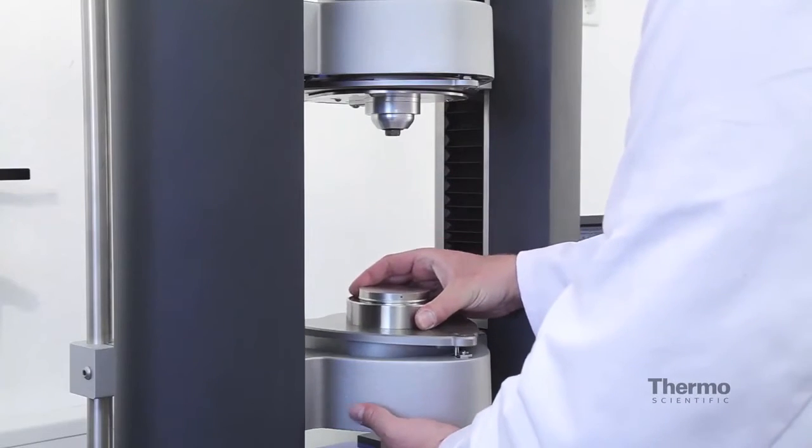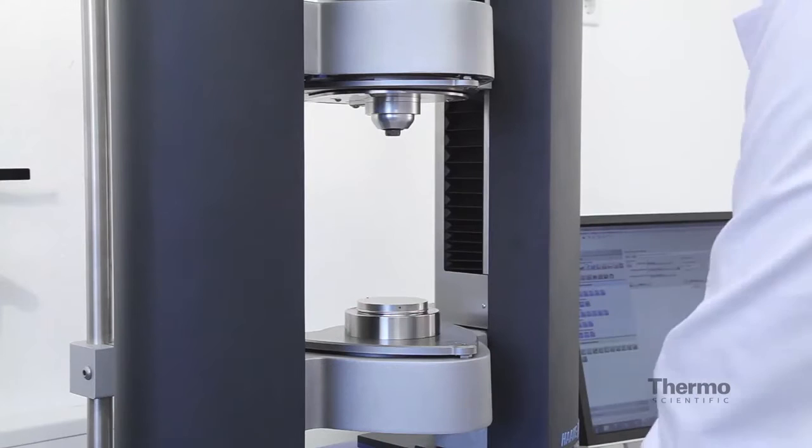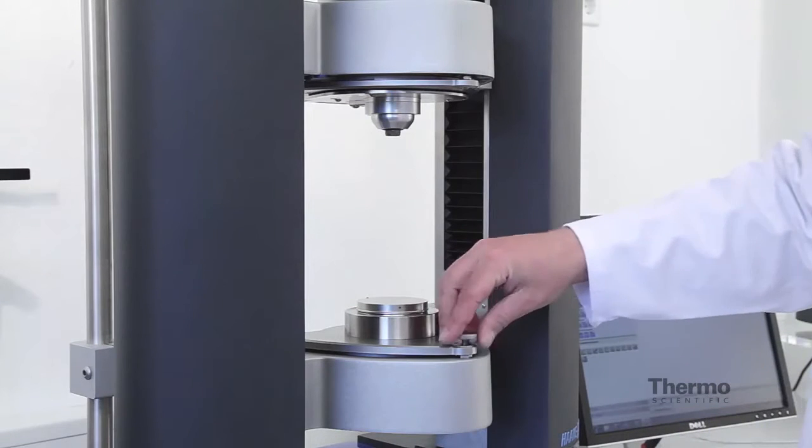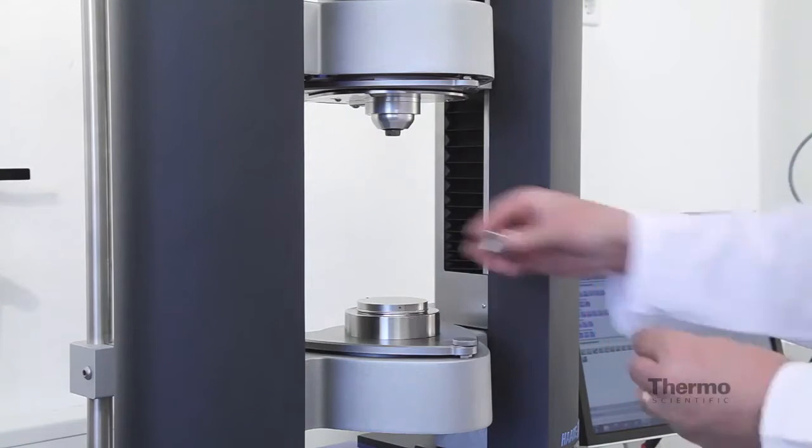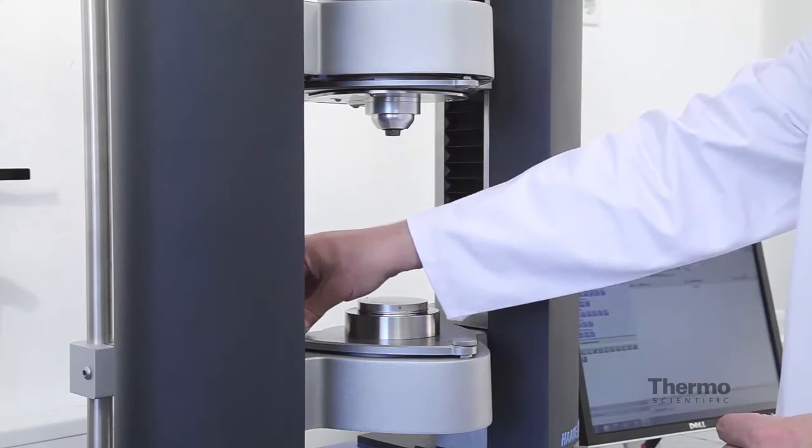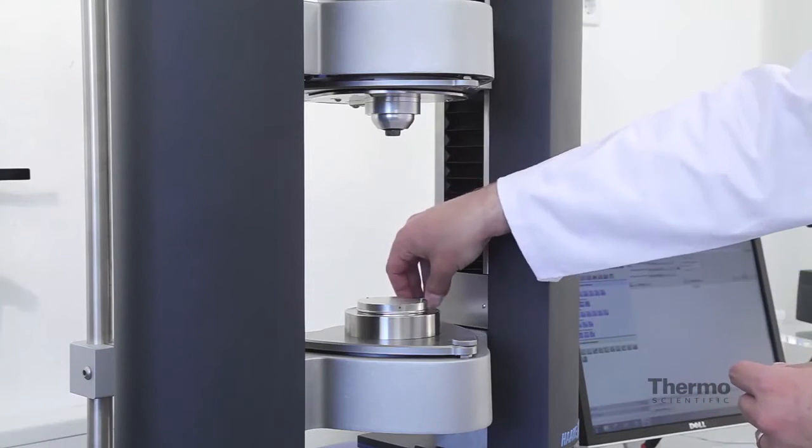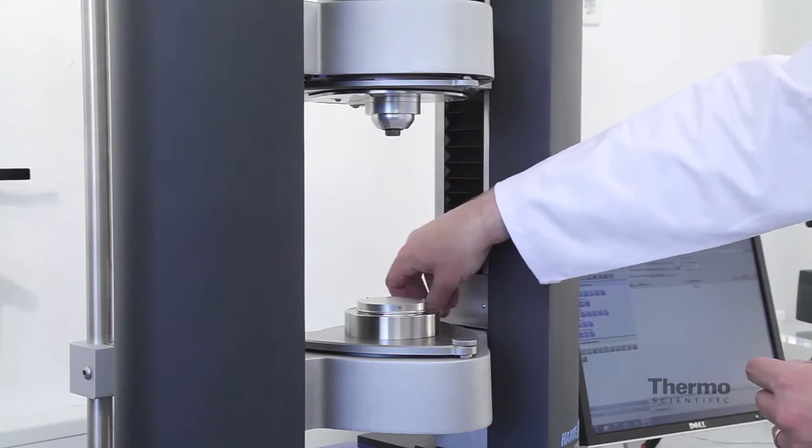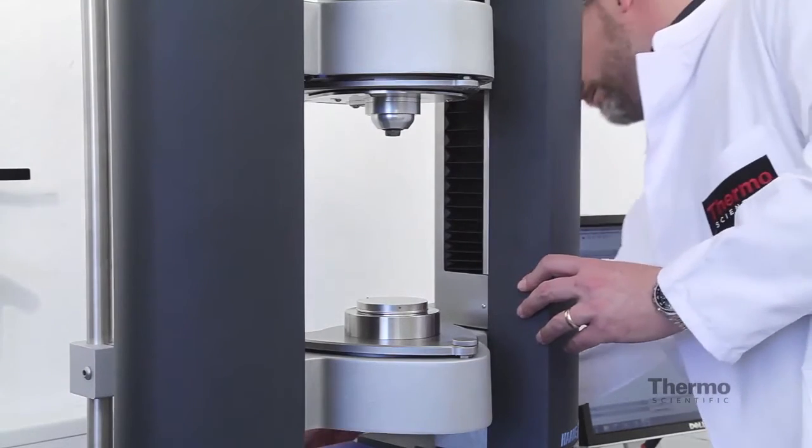For instance, shown here the implementation of a temperature control module, here the Peltier plate, by just locking it with three locking screws manually before then connecting it to the frame of the system with quick connect adapters.